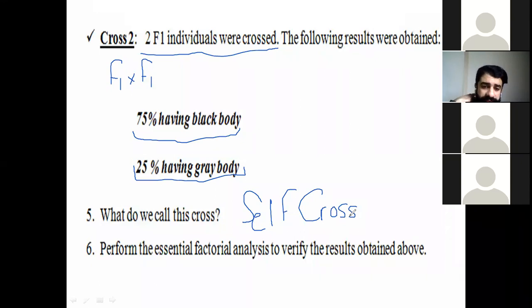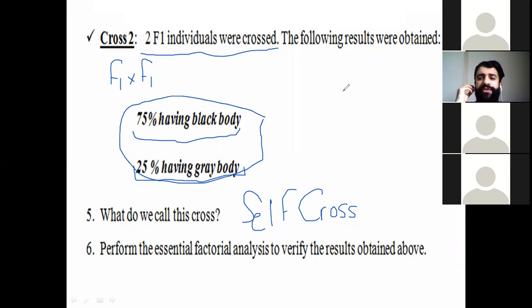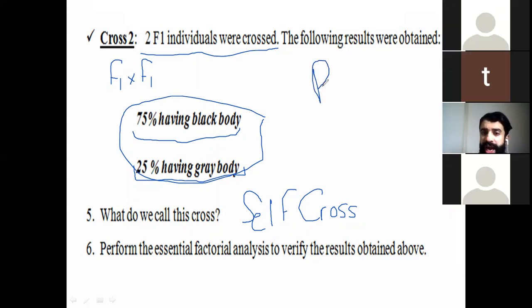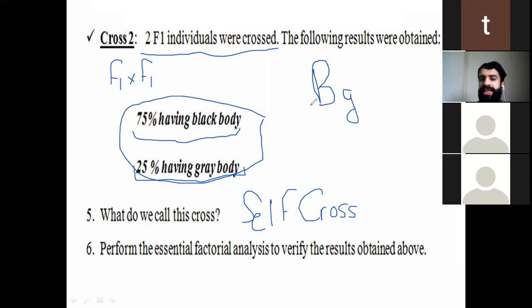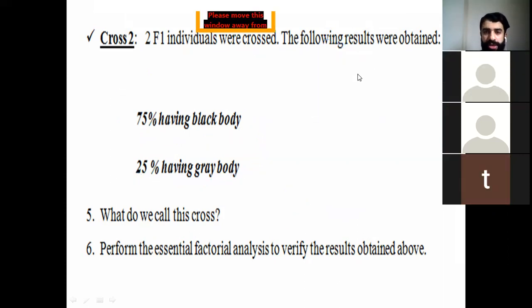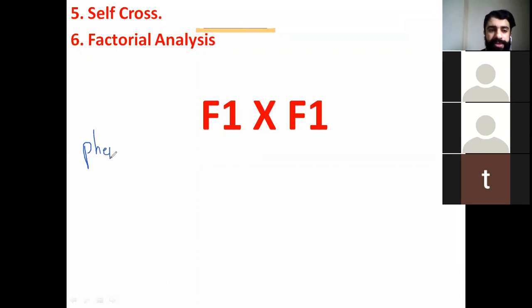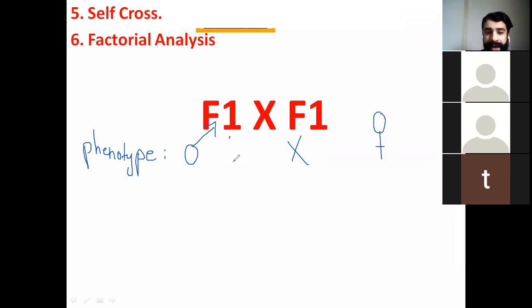Part six: perform the essential factorial analysis to verify the results. When you finish, you must write: 'Therefore the results are verified.' First, what is the genotype of F1? We found it in Part 4 — it is Bg. So we are crossing Bg with Bg. For the factorial analysis, start with the phenotype: both parents are black, since both have the same genotype.